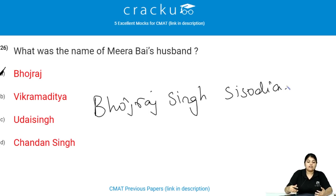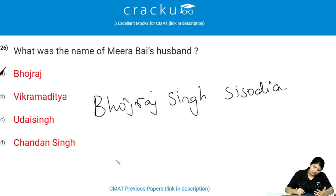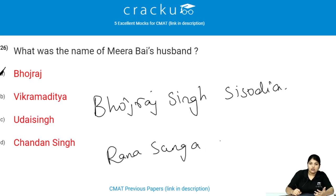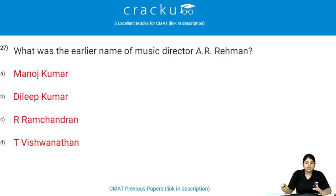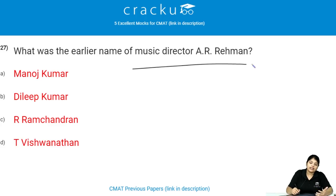Bhojraj was from the Sisodia clan; he is the eldest son of Rana Sanga, the ruler of Mewar. What was the earlier name of music director A.R. Rahman? The earlier name of A.R. Rahman is Dilip Kumar.